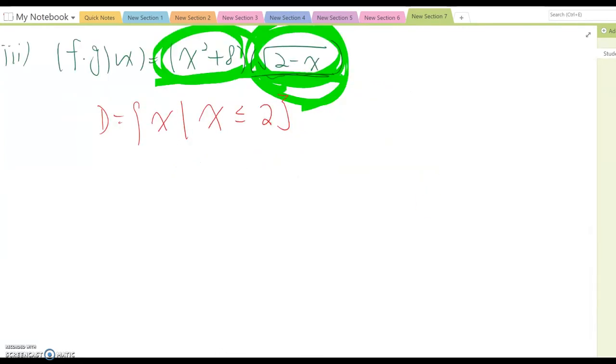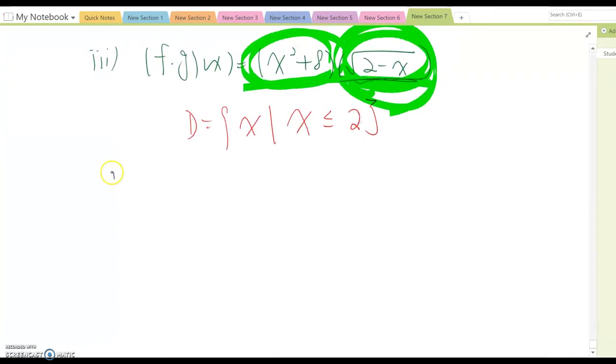Okay, so number four case, f over g of x. Okay, this case, x squared plus 8 over square root 2 minus x.